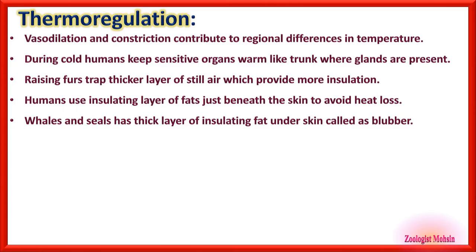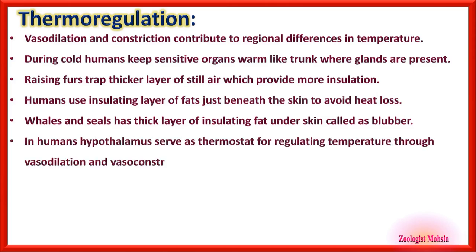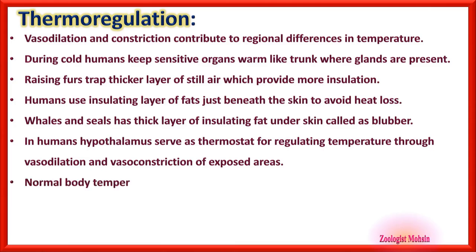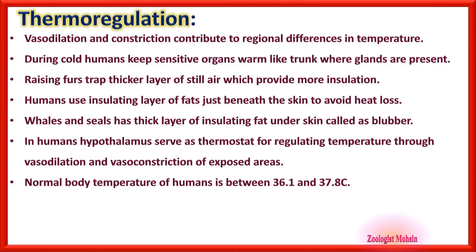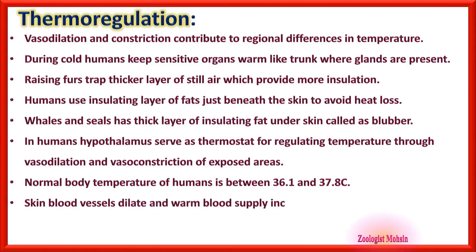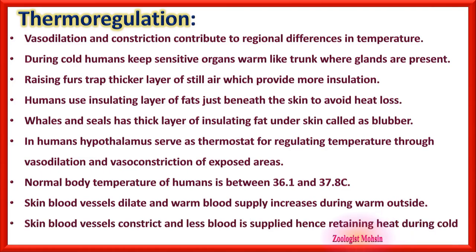Whales and seals have a thick layer of insulating fat under the skin called blubber. In humans, the hypothalamus serves as a thermostat, controlling temperature through vasodilation and vasoconstriction of exposed areas like the skin. Normal body temperature of humans is between 36.1 and 37.8 degrees centigrade. Skin blood vessels dilate and warm blood supply increases in warm conditions; they constrict and less blood is supplied during cold, retaining heat.